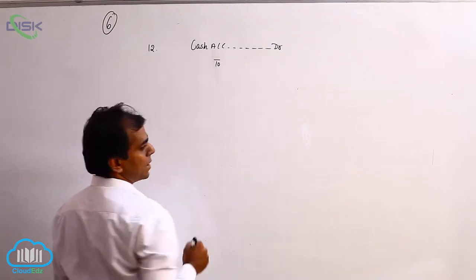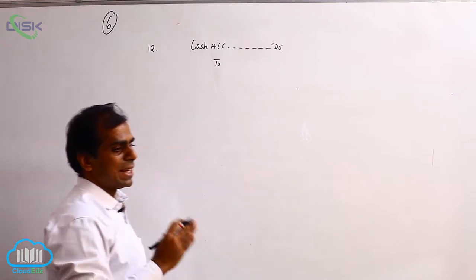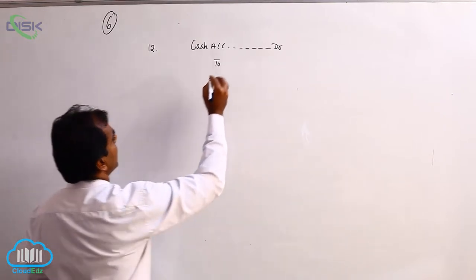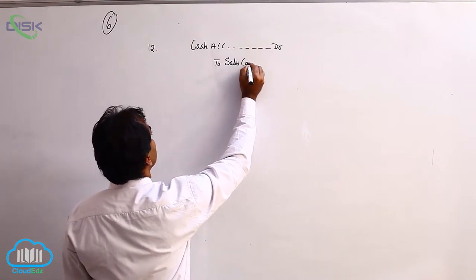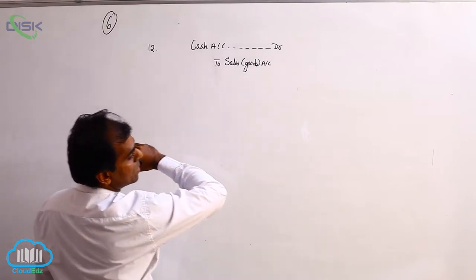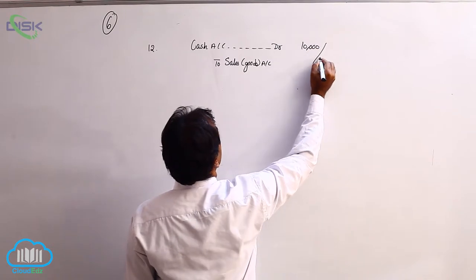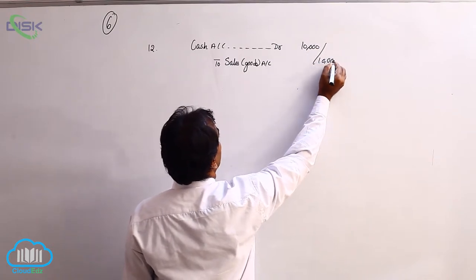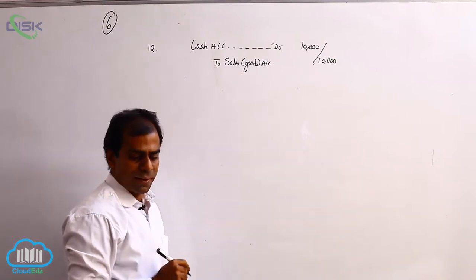Now goods are going out. Goods are real account. Real account rule says credit what goes out. So we will write sales, which represents goods going out. The amount is 10,000. The journal entry is cash account debit to sales account, with narration being goods sold for cash.